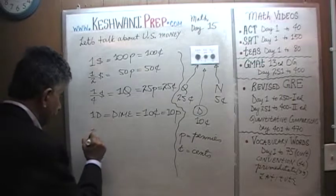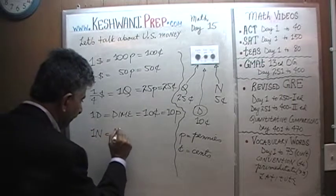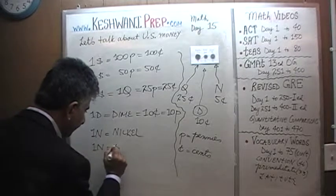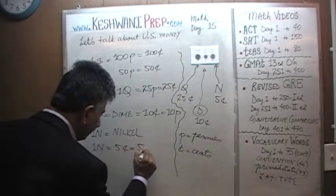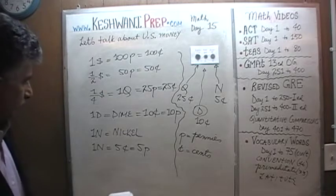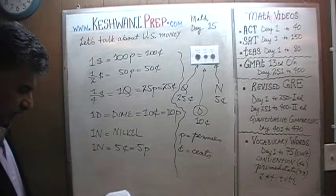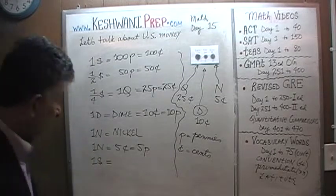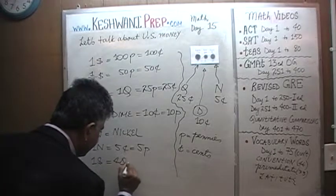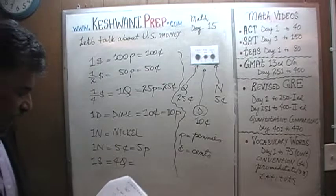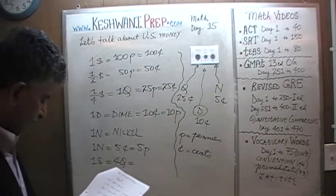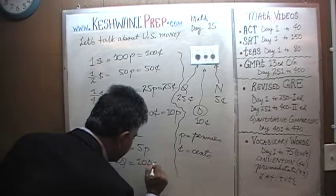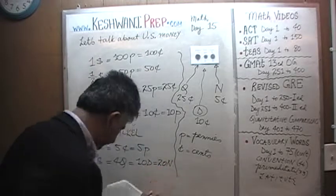A nickel is worth five cents or five pennies. Therefore, one dollar is the same as four quarters — since each quarter is 25 cents — which is the same as 10 dimes, which in turn is the same as 20 nickels.